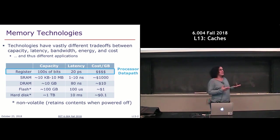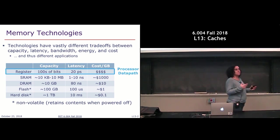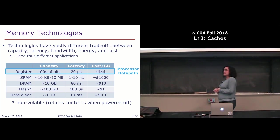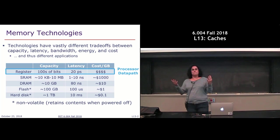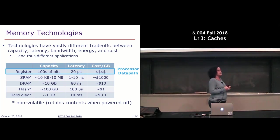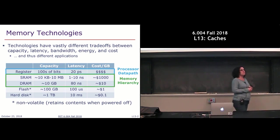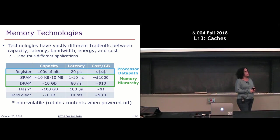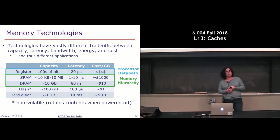Registers are part of our processor data path, and then we have a main memory to store larger amounts of data than what we can store in registers. This main memory consists of two types of memory technology: one is called SRAM, which stands for static random access memory, and the other is DRAM, which stands for dynamic random access memory.